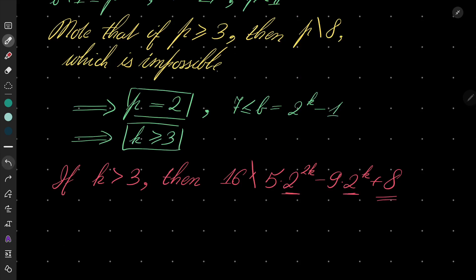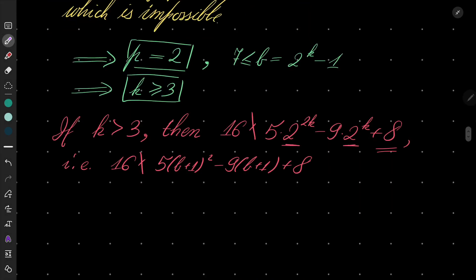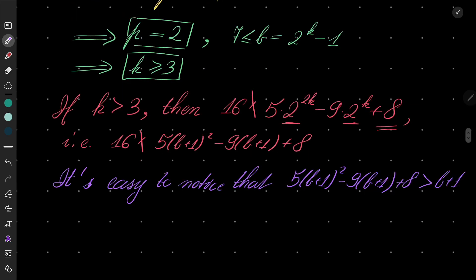Which means 16 doesn't divide 5(B+1)² - 9(B+1) + 8. Let's also notice it's easy to notice that 5(B+1)² - 9(B+1) + 8 is strictly greater than B+1. You can verify this easily. It's a simple quadratic inequality which is satisfied by every real number B.